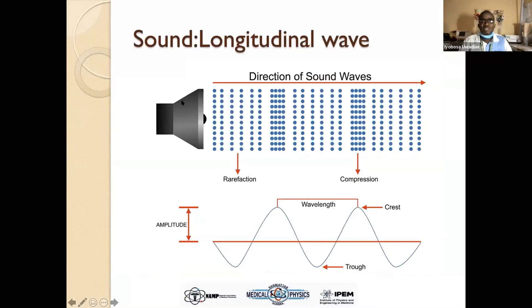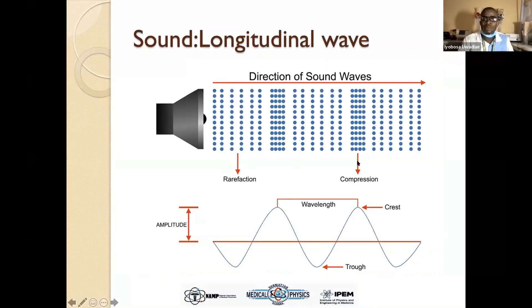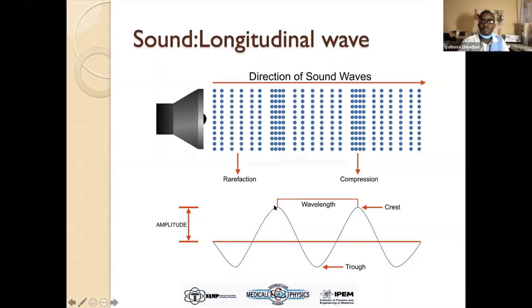Sound is a longitudinal wave. We all know the representation of that longitudinal wave. We have areas of increased pressure, which is compression, and areas of reducing pressure, which is rarefaction. Of course, we can represent this with a waveform where we have the peak of the positive side — the peak of compression — and then the peak of the rarefaction, which gives us the negative amplitude.